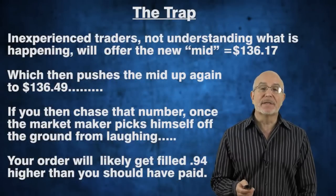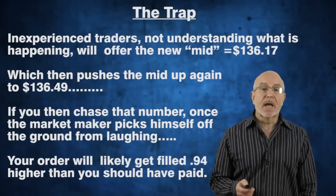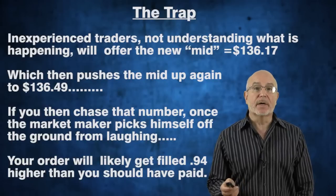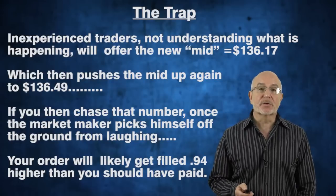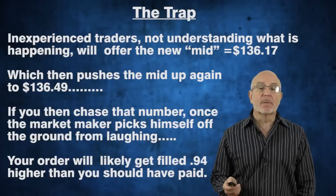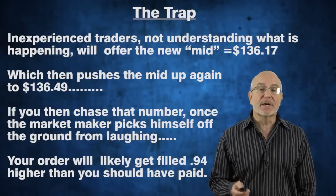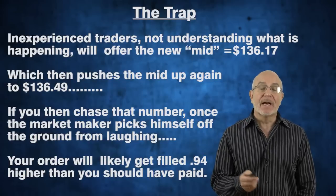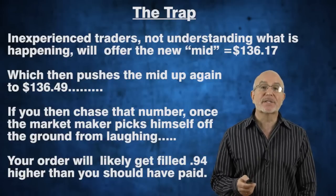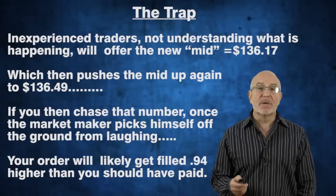The fact that you've now created a new mathematical average — because your bid became the best bid in the world — is really irrelevant to where you should get filled. How does this turn into a trap? The trader who doesn't understand how the mid is being calculated suddenly sees it jump because of his own order or a single retail trader's order. You're working with bad data, thinking that new artificial mid is an appropriate price to pay — but it's too much. If you then chase that number and place a new order at the new mid, that will increase the mid again to yet another artificial number.